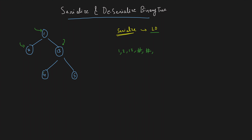Node 2 should also have had a right child, but it doesn't, so that gets a hash as well. Then we have 4, so we append 4 comma. After that, 5 — append 5 comma. Remember, nulls cannot have left and right, but node 4 can have a null left and null right, and node 5 can have a null left and null right. So we append hash for left of 4, hash for right of 4, hash for left of 5, hash for right of 5. This is the string I will return while serializing.